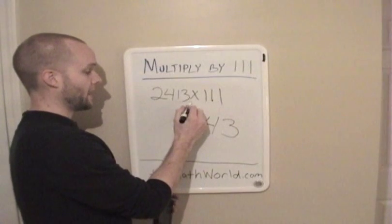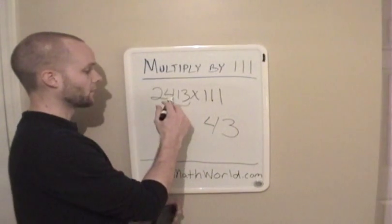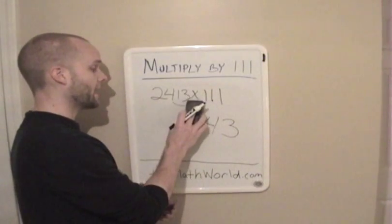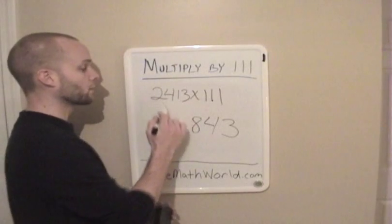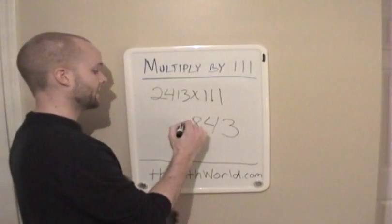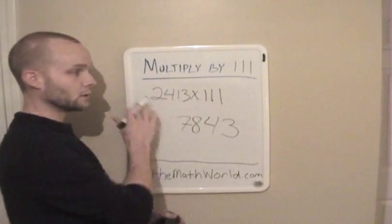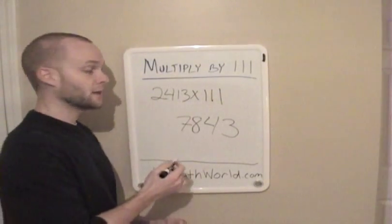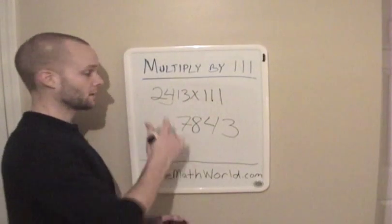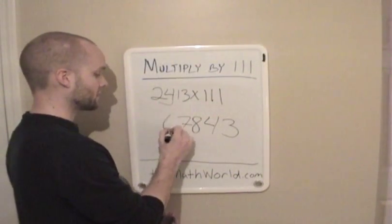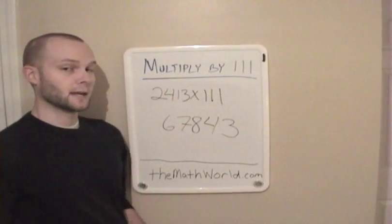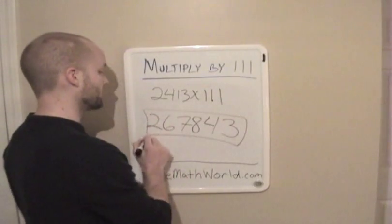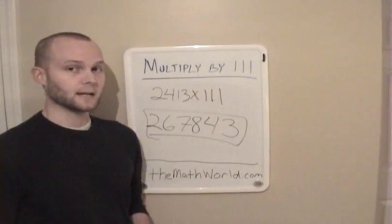Next, we're going to add the last three numbers, which is 4 plus 1 plus 3, which is 8. Then you're going to add the next three numbers, which is 1 plus 4 plus 2, and that's 7. You would continue this pattern as long as the number is. But now that we've done the last three numbers, all we can do is add the next two numbers. So 4 plus 2 is 6, and then we write our last number down — just write down 2 — and this is our number: 267,843.